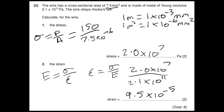Finally, calculate the strain. Young's modulus = stress / strain, so rearranging: strain = stress / Young's modulus. Substituting: strain = (2.0 × 10⁷) / (2.1 × 10¹¹) = 9.5 × 10⁻⁵. There are no units for strain because it's just the ratio of extension to original length.